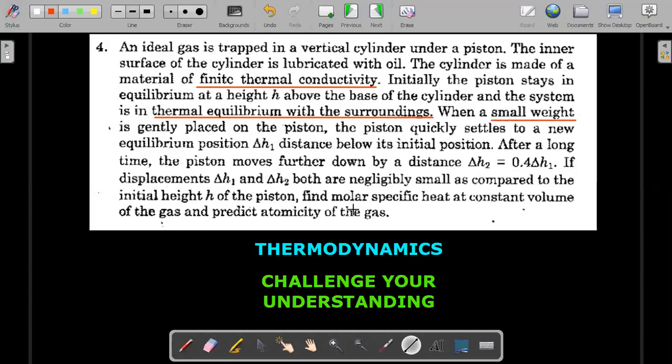Initially the piston stays in equilibrium at height H above the base of the cylinder and the system is in thermal equilibrium with the surroundings. When a small weight is gently placed on the piston, the piston quickly settles to a new equilibrium position delta H1 distance below its initial position. After a long time, the piston further moves down by another distance delta H2, which is smaller than delta H1 by a ratio of 0.4.